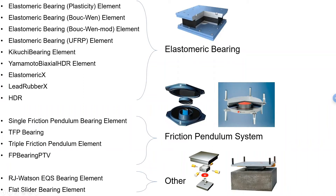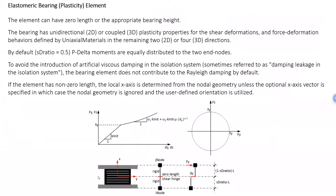OpenSeas has a lot of bearing elements — specialized elements for modeling isolators. As you probably know, you can model isolators in simplified ways using just equivalent springs, but in this case they made specialized elements. You can find them under element property, bearing elements, and they are all listed there. They can be classified into elastomeric bearings, friction pendulum ones, and then other more specialized kinds of isolator systems.